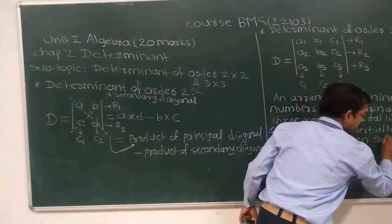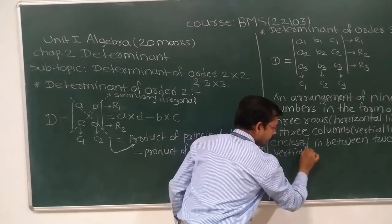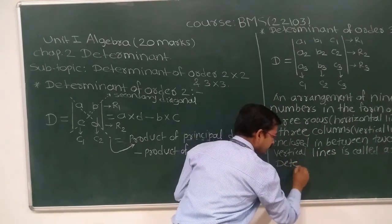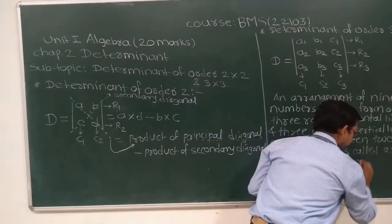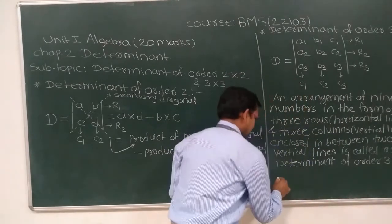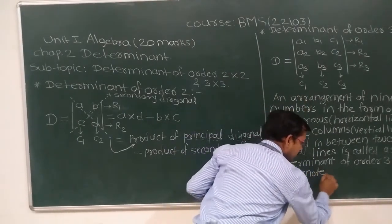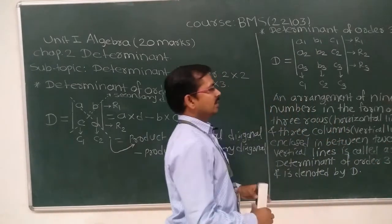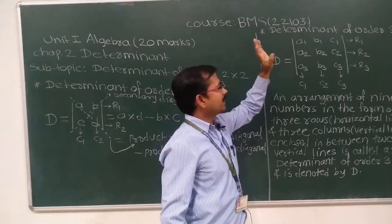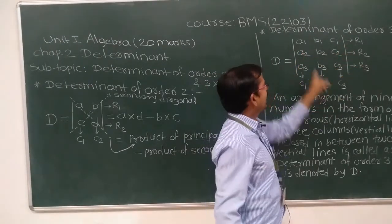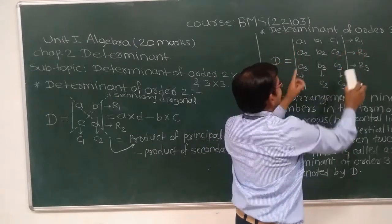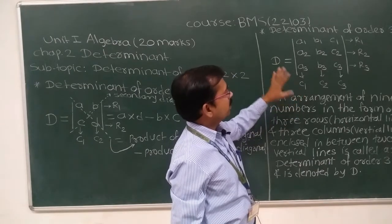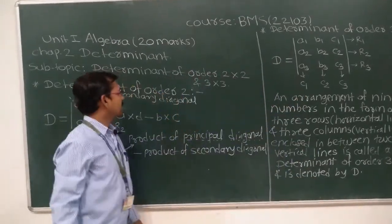Between two vertical lines is called a determinant of order 3 by 3, and is denoted by capital letter D. An arrangement of nine numbers in the form of three rows and three columns enclosed between two vertical lines is called a determinant of order 3 by 3, and is always denoted by capital D.